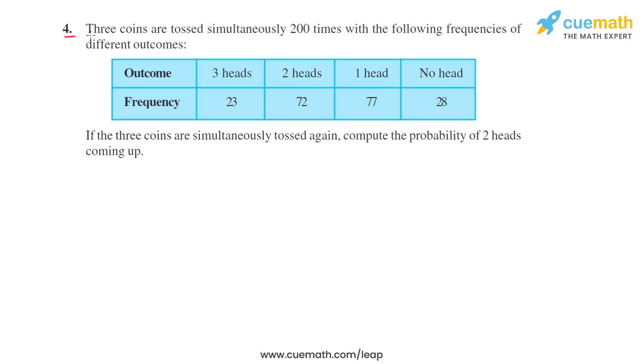In the fourth question, it is given three coins are tossed simultaneously 200 times with the following frequency of different outcomes: three heads appeared 23 times, two heads appeared 72 times, one head appeared 77 times, and there were 28 times when no head appeared. Then they're asking, if the three coins are simultaneously tossed again, compute the probability of two heads coming up.